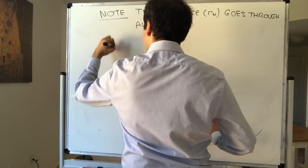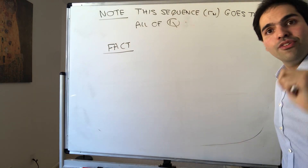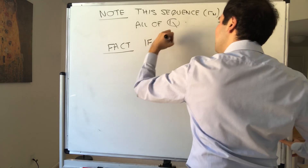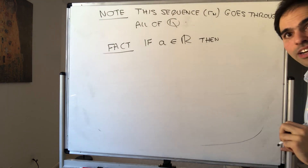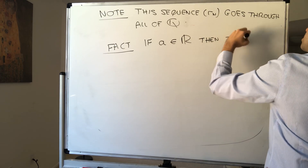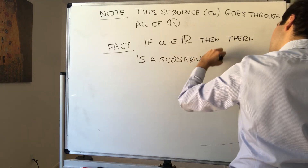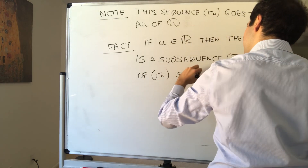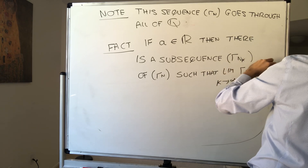Not only does this sequence go through all the rational numbers, but if you add limits to it, it actually goes through all the real numbers. The fact is: if a is any real number, then there is a subsequence r_{n_k} of r_n such that the limit as k → ∞ of r_{n_k} equals a.